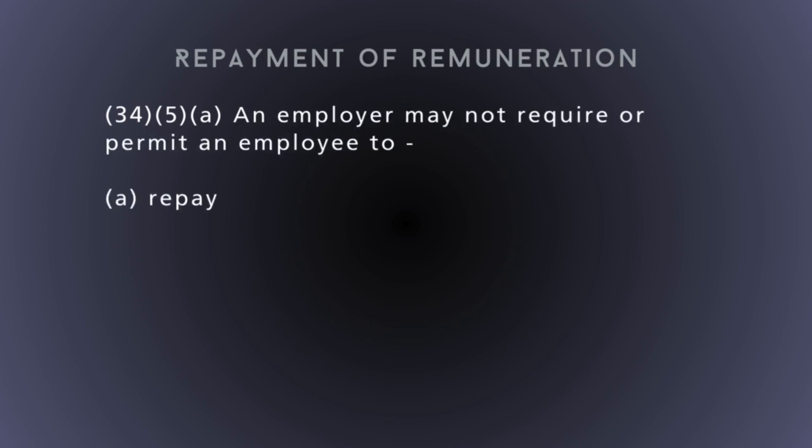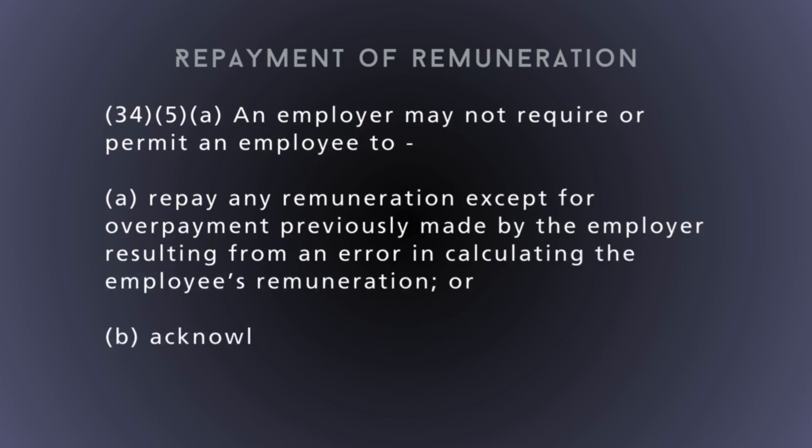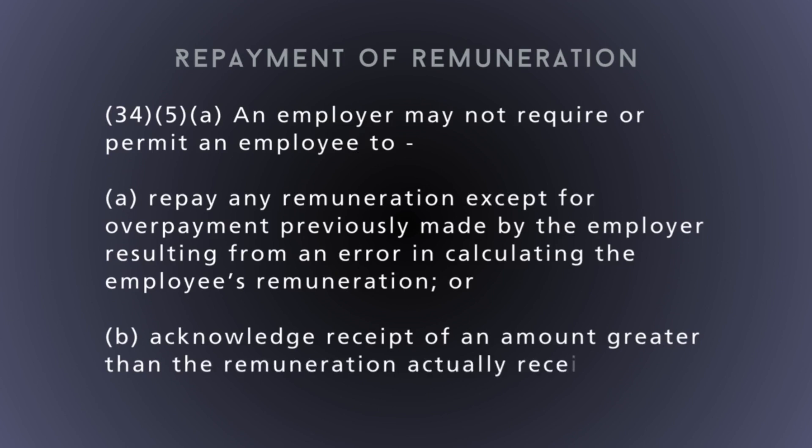Section 34(5), the final section: an employer may not require or permit an employee to repay any remuneration except for overpayments previously made by the employer resulting from an error in calculating the employee's remuneration, or acknowledge receipt of an amount greater than the remuneration actually received. This means you cannot deduct income that was granted to the employee unless it is as a result of an overpayment. This section allows employers to rectify a payment mistake but does not allow arbitrary deduction of income.